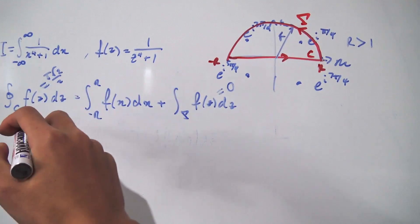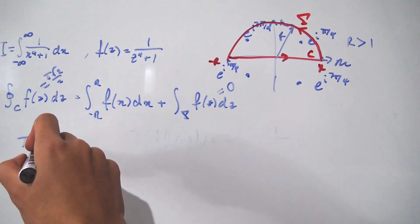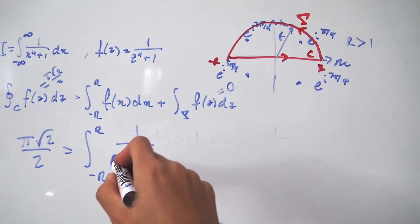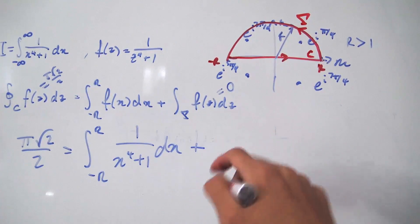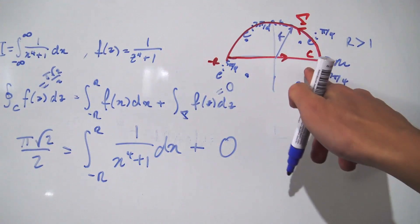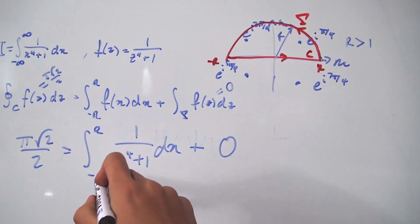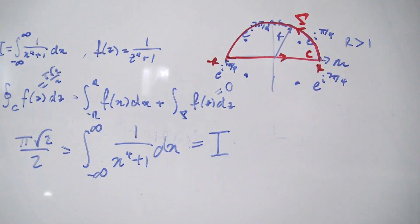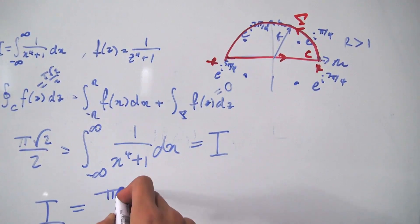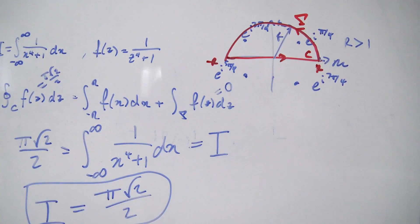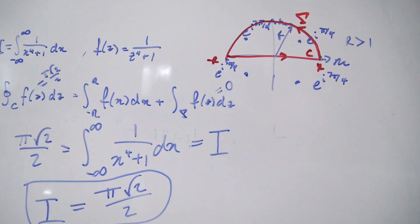Putting it all together: the contour integral equals π√2/2, which equals the integral from negative R to R of 1/(x⁴+1) dx plus the arc integral (which is 0 in the limit). Taking R→∞, the real-axis integral becomes our original integral I. We conclude that I, the integral of 1/(x⁴+1) over the real numbers, equals π√2/2. That's the final answer. Hope you guys enjoyed it, and I'll see everyone next time.